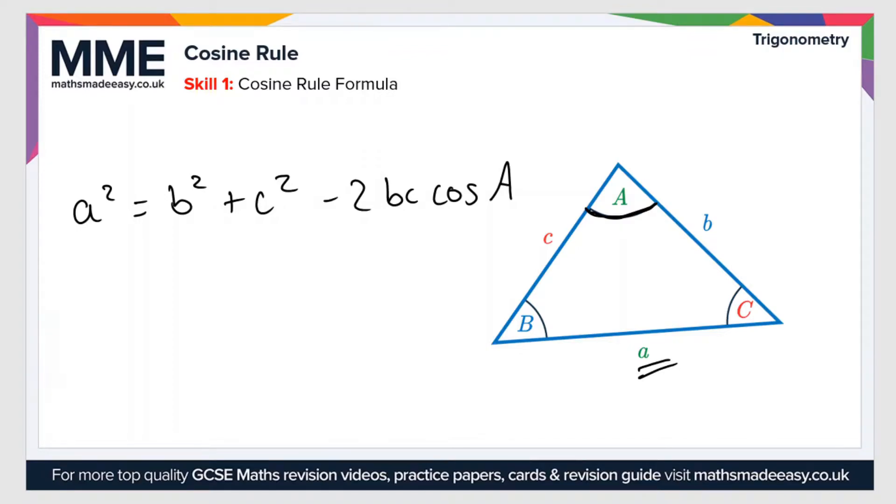So this formula can also be rearranged if you wanted to make cos a the subject, so if you were trying to find the missing angle. So a squared plus 2bc cos a equals b squared plus c squared. That's what I've done there is added the 2bc cos a to the other side.